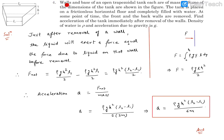Question number four. It reads, walls and base of an open trapezoidal tank, each are of mass M. Some of the dimensions of the tank are shown in this figure. So this is figure, it shows that this is L1, this is L2, this is H.